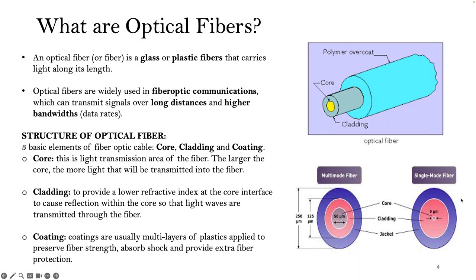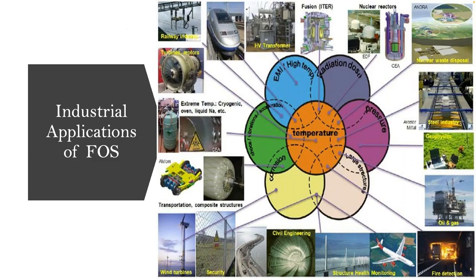Fibers come in two modes: single mode fibers and multi-mode fibers, depending on the application. Generally, single mode fibers are fairly good for transmission of signals over long distances. Multi-mode fibers are mainly for short distances — if you want signal transmission over a short distance, it's better to use that type.